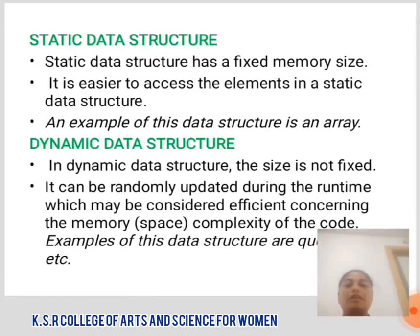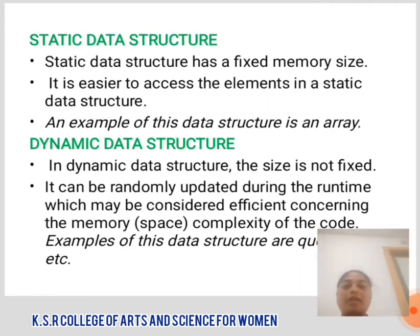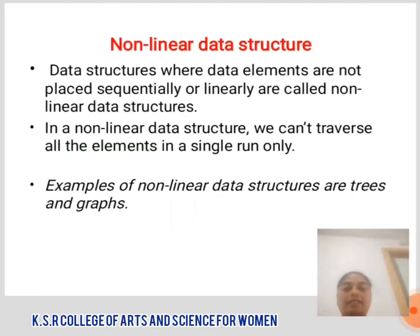The Static Data Structure has a fixed memory size. It is easier to access the elements in a static data structure. An example of this data structure is an Array. In Dynamic Data Structure, the size is not fixed. It can be randomly updated during the runtime, which may be considered efficient concerning the memory space complexity of the code. Examples of dynamic data types are Queue, etc.